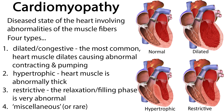Cardiomyopathy is relatively rare in children and refers to a diseased state of the heart involving abnormalities of the muscle fibers. There are four types: dilated or congestive, which is the most common type where the heart muscle dilates causing abnormal contracting and pumping; hypertrophic, where the heart muscle is abnormally thick; restrictive, where the relaxation or filling phase is very abnormal; and miscellaneous or rare. Each type has different clinical features and treatments.